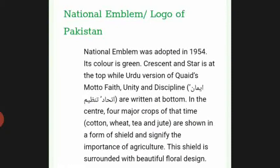The national emblem of Pakistan was adopted in 1954. Its color is green, with a crescent and star at the top, while the Urdu version of the motto — Faith, Unity, and Discipline (Iman, Ittehad, Tanzim) — is written at the bottom. In the center, four major crops of that time — cotton, wheat, tea, and jute — are shown in the form of a shield, signifying the importance of agriculture. This shield is surrounded by a beautiful floral design.